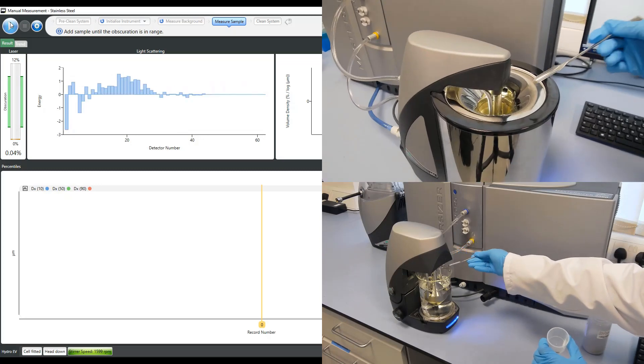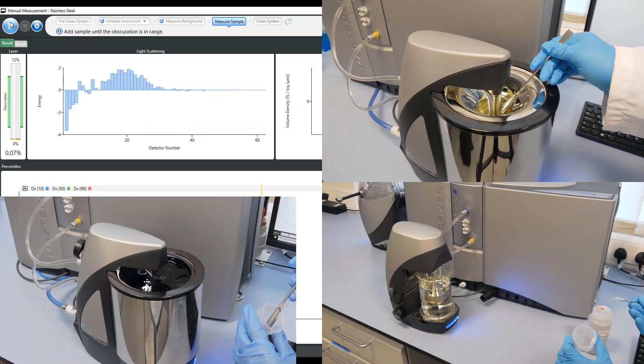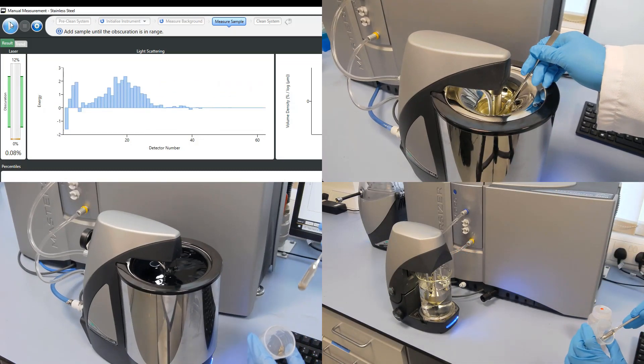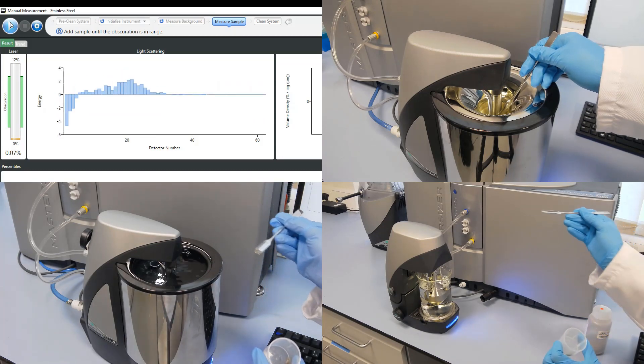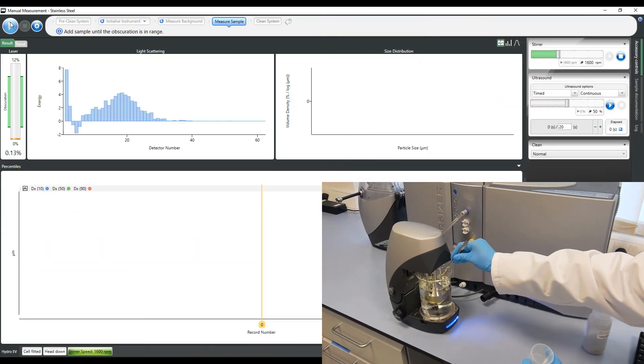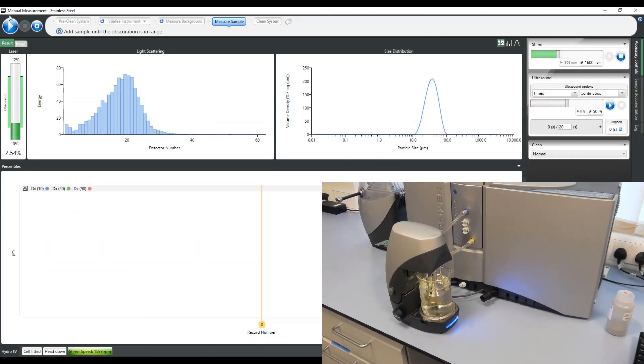The same method can be used for adding metal powders to the Hydro MV and Hydro LV. When the obscuration arrives within the defined range, the measurement can be started.